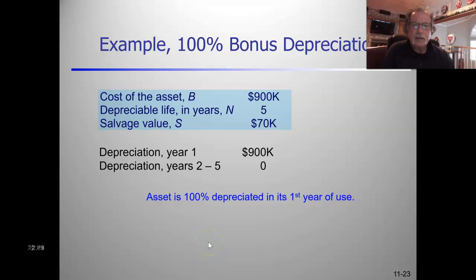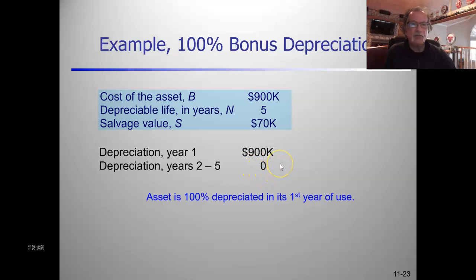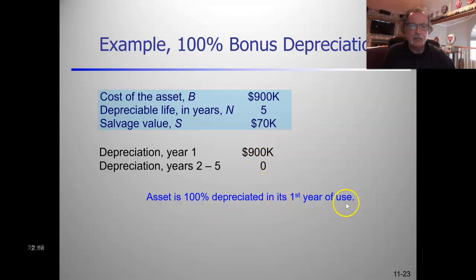Using the same asset from the straight line example - cost $900,000, depreciable life five years, salvage value $70,000 - but with 100% bonus depreciation, the depreciation taken in year one is the full $900,000. There's no more depreciation to take after year one, and upon disposal, if the asset is sold for anything greater than zero, that's depreciation recapture.